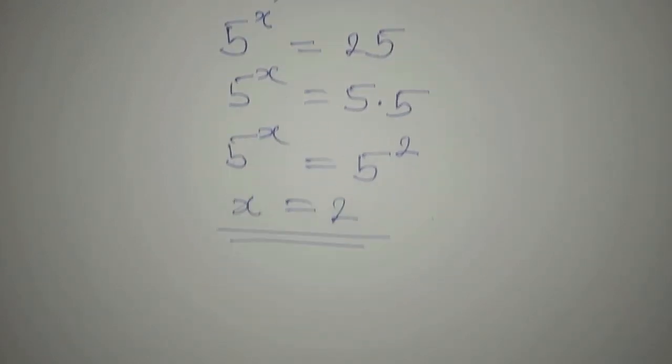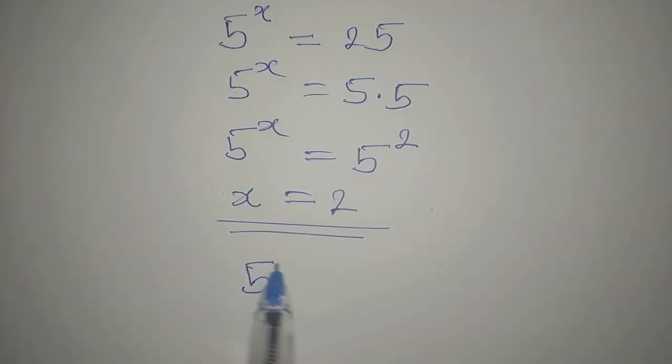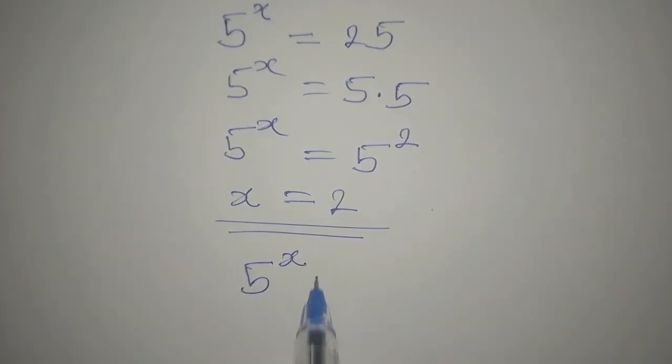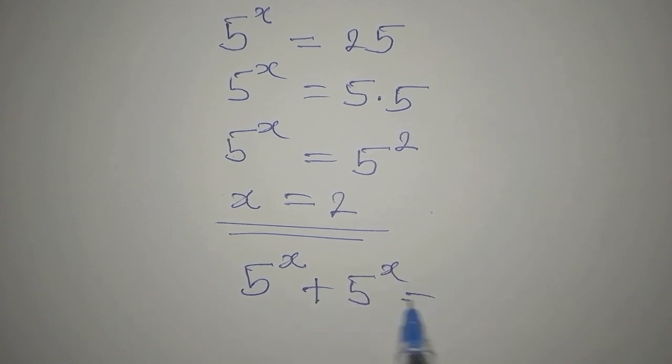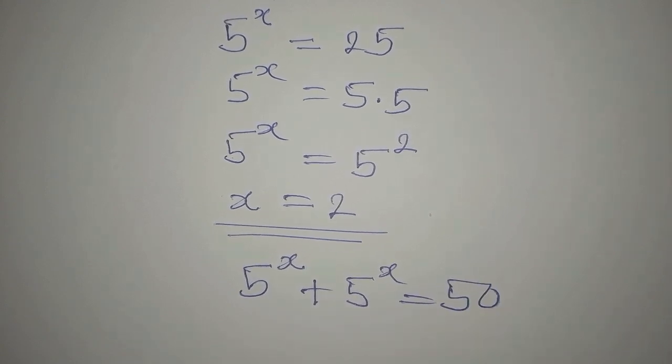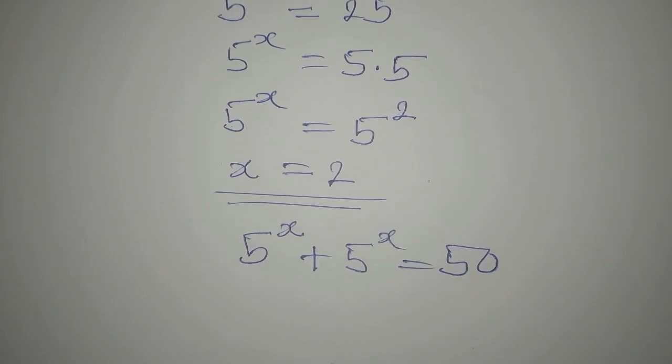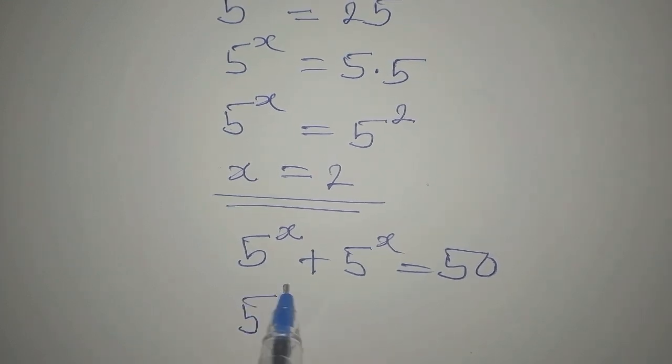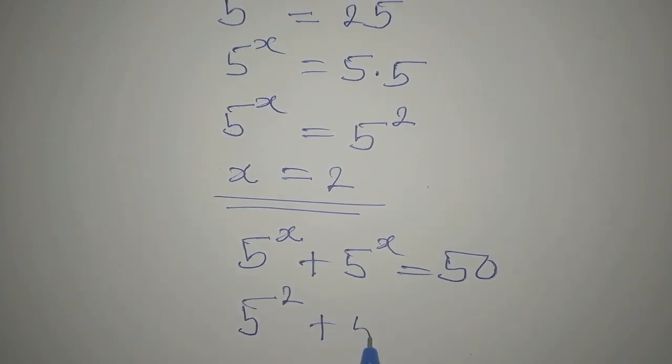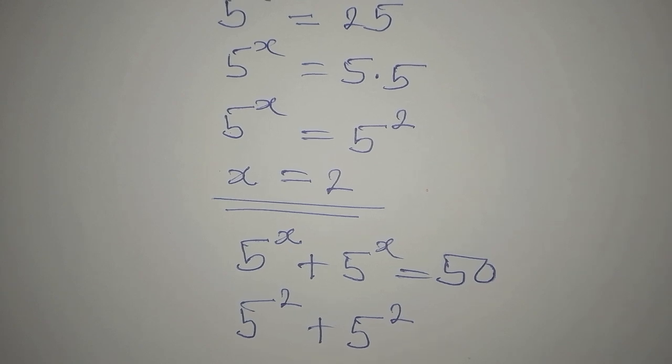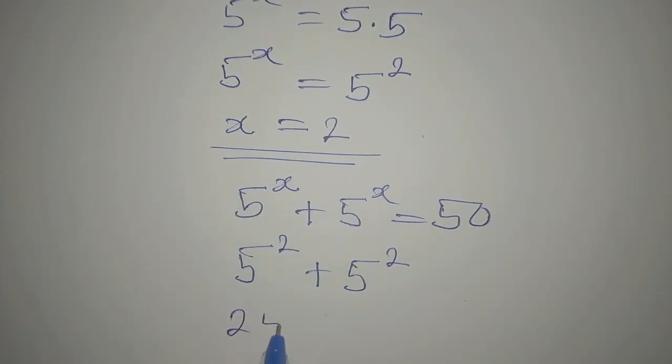If we want to verify, the equation remains 5 to the power of x plus 5 to the power of x equals 50. So our x is 2: we have 5 to the power of 2 plus 5 to the power of 2. 5 to the power of 2 is 25, so we have 25 plus 25.